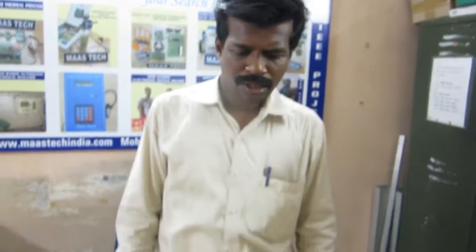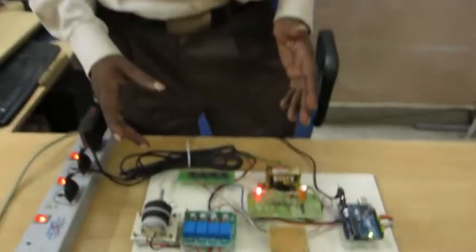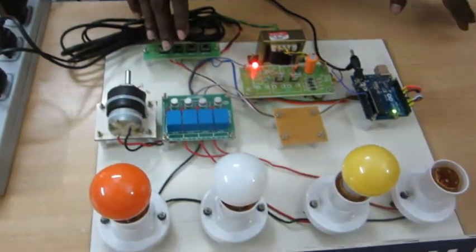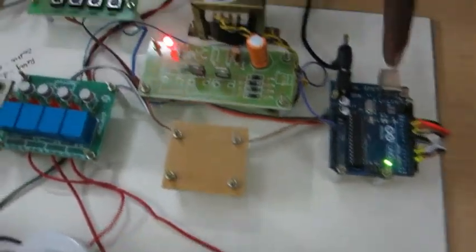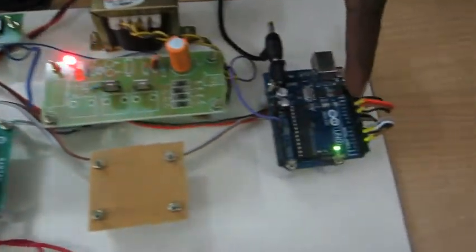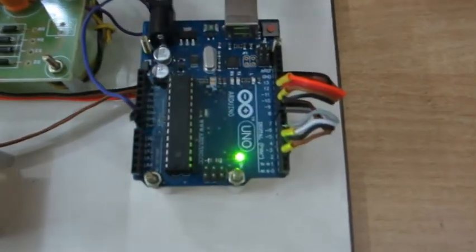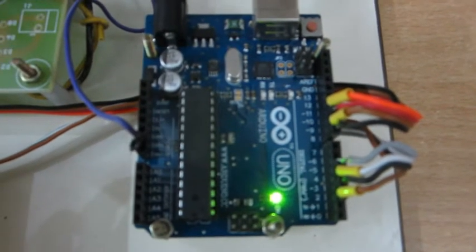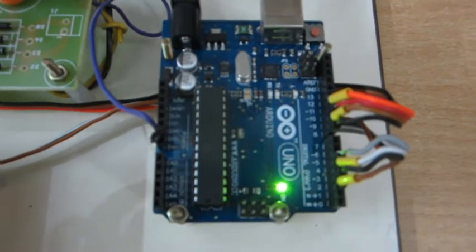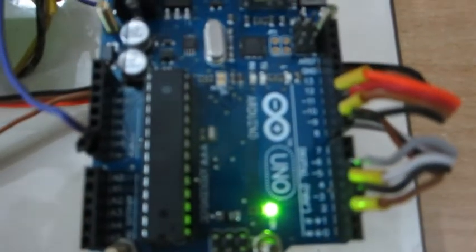Hi friends, this project is an Arduino application-based equipment on-off controller through keypad. This is the Arduino board, the Atmega 328 board. This board contains 14 input and output pins including PWM output and six channel ADC.